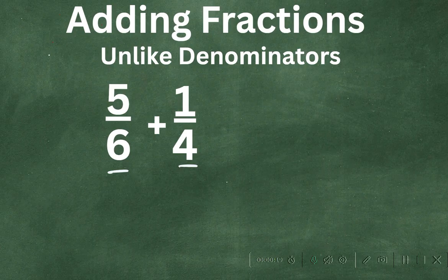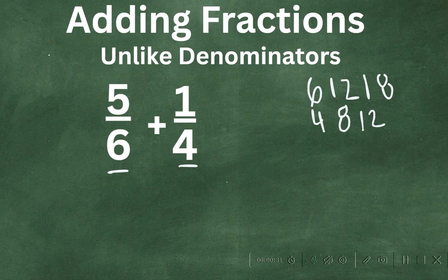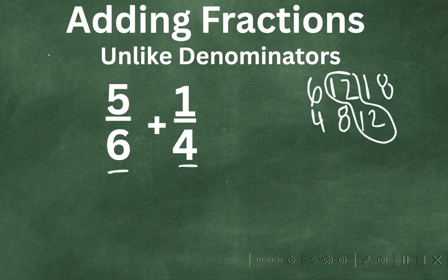There's a couple ways you can do it, but one way is we can just write out the factors. We have 6, 12, 18, then we have 4, 8, 12, and you will notice we have a common denominator, lowest common denominator of 12.